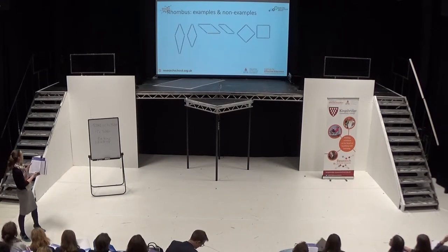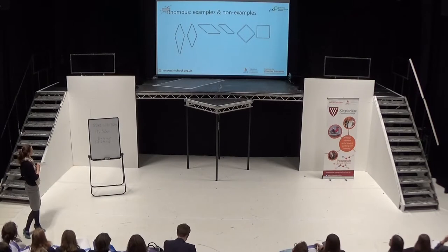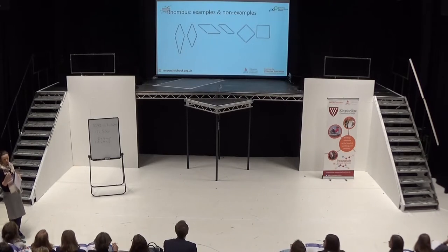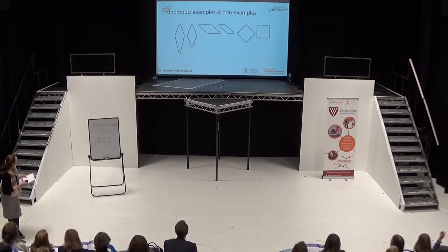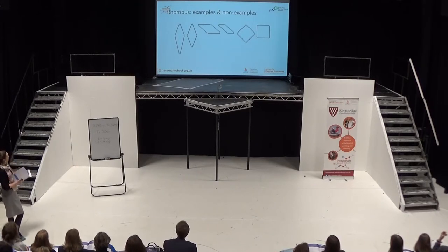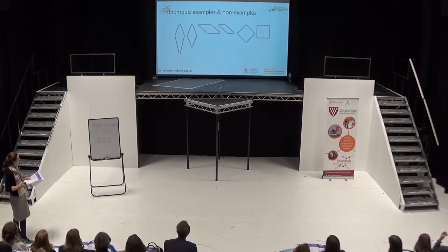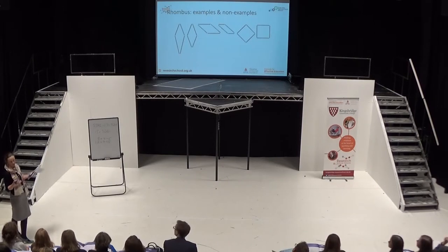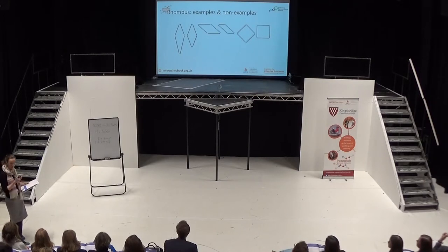The next idea is about examples and non-examples. Any of you that have been involved with mastery work via NCTM might have come across it — or 'concept and non-concept' as I've also heard it called. Here's an example of a task helping children to refine their definition of a rhombus. The idea is we're not just going to look at what rhombuses are, but also shapes that we might say are rhombuses that aren't, and shapes we might say are not rhombuses that actually are.